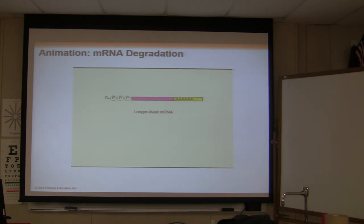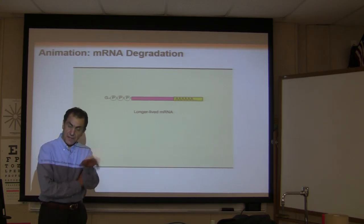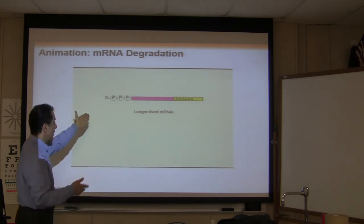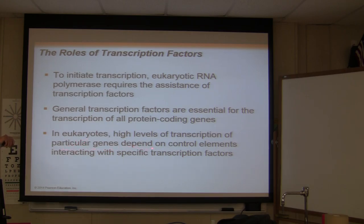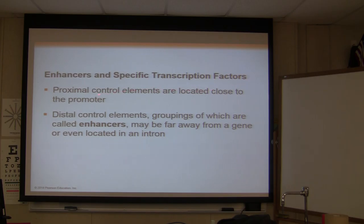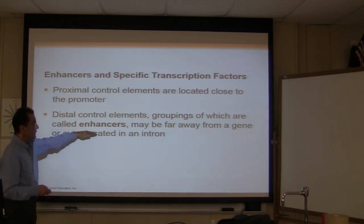The next segment of this chapter talks about how long an mRNA stays inside a cell. The longer mRNA stays inside the cell, the more protein is going to be synthesized; the shorter it remains, the sooner it is degraded. Eukaryotic RNA polymerase requires the assistance of transcription factors. General transcription factors are essential for transcription of all protein-coding genes. In eukaryotes, high levels of transcription of particular genes depend on control elements interacting with specific transcription factors — enhancers. Proximal control elements are located close to the promoter, and the distal one is called the enhancer.